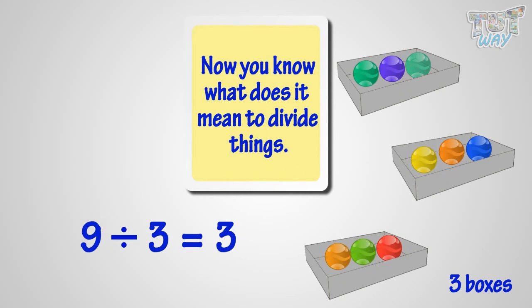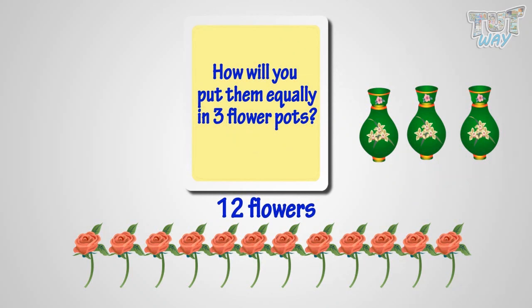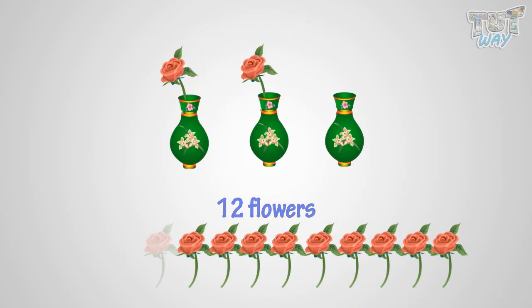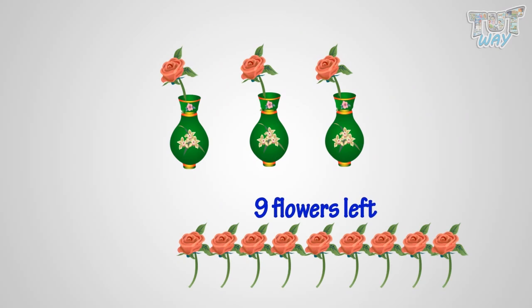Now you know what it means to divide things. There are twelve flowers. How will you put them equally in three flower pots? Let's see. First, put one flower each in a pot.